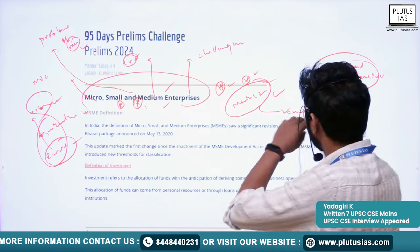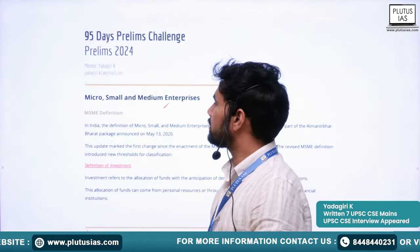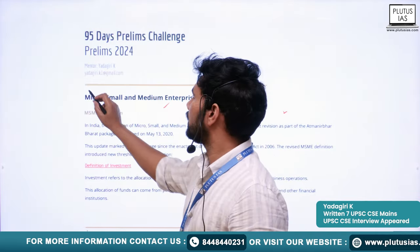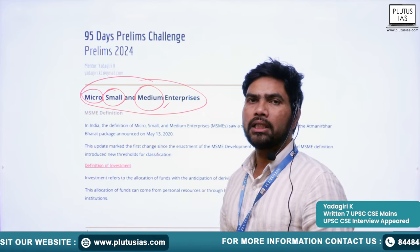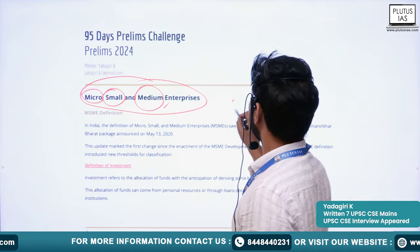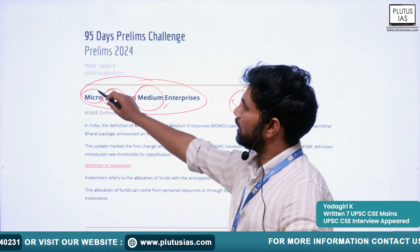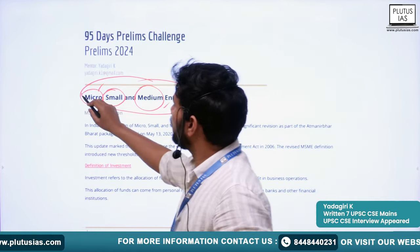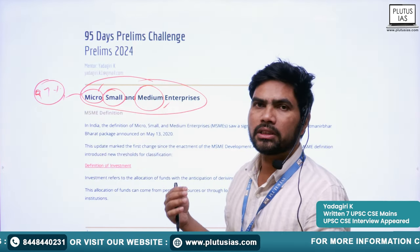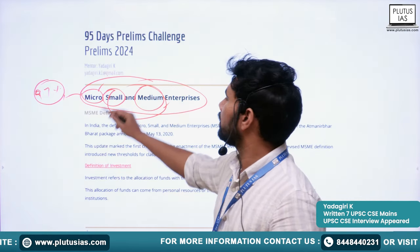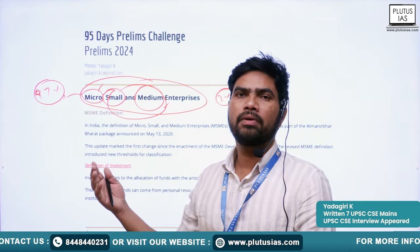The MSME sector has three components: micro enterprises, small enterprises, and medium enterprises. This sector is sometimes also called SME — small and medium enterprises — where micro enterprises are left out. However, in the total MSME sector, micro enterprises account for almost 97 percent, while small and medium enterprises comprise only 3 percent. So micro enterprises are very dominant within the MSME sector.